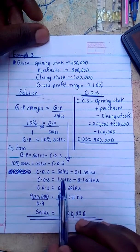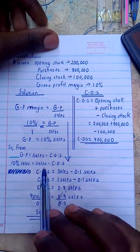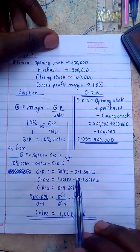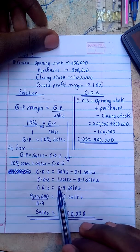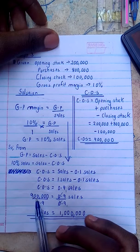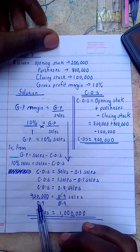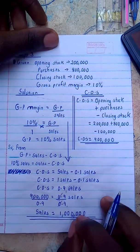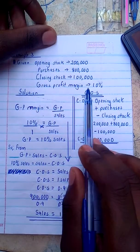I've changed the percentage to a decimal so I can solve it easily. Cost of sales equals one minus 0.1, which gives 0.9 of sales. So 900,000 equals 0.9 of sales. Dividing both sides by 0.9 gives sales equal to 1,000,000. That's how you find sales using the gross profit margin, because the margin formula relates to sales.